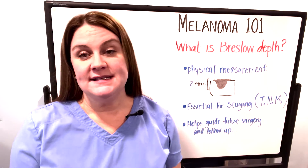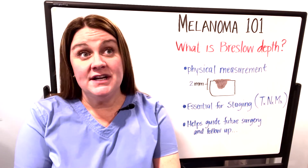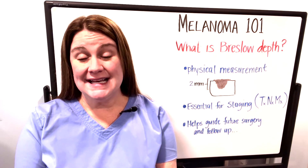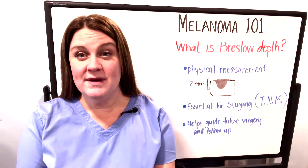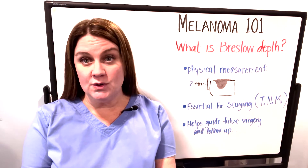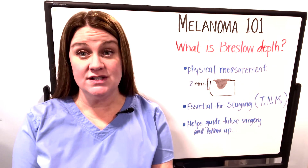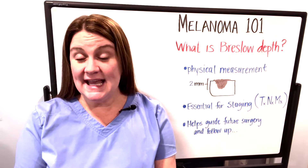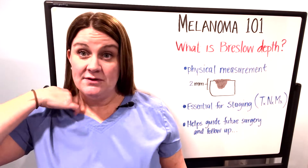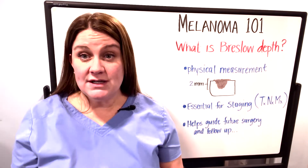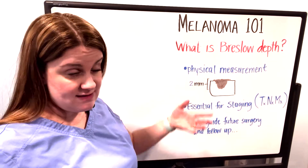A Breslow depth is something that is reported on pathology reports and it is a very descriptive term that tells us essentially how deep your melanoma is. The very interesting thing is it's a physical measurement. When the sample from your biopsy comes back melanoma and it's sent to a pathologist, one of the things that they do is actually take a ruler — a pathology ruler that's part of a microscope — and they take a physical measurement of where the melanoma starts on the epidermis and how deep it goes down into the skin.